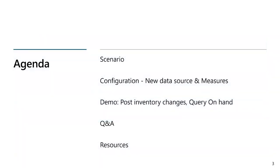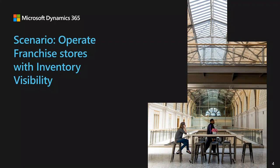The agenda today consists of the following parts. We start by introducing how to configure Inventory Visibility Service for a third-party system after a general introduction on the scenarios. Under this configuration, we make on-hand changes and queries for inventory data within two systems. Then we introduce techniques to manage data across different systems using the concept of calculated measure. Followed by that, we have an end-to-end demo as well as the Q&A session. We will begin by introducing the scenario to operate franchise stores with Inventory Visibility, and my colleague Yufey will be covering this part.